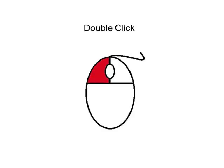Another mouse action is the double click. To double click is to press the left mouse button two times in rapid succession without moving the mouse between clicks. This action is used to open icons or programs.